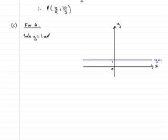So sub y equals 1 into L1. You remember that was y equals 3x plus 2. So therefore I'm going to have 1 equals 3x plus 2, and this will allow us to figure out what the x-coordinate would be.